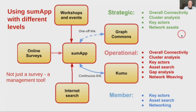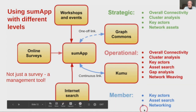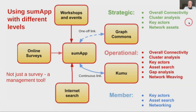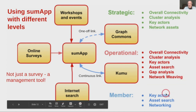We've tried to list the sorts of activity that would be interesting to people at the strategic level, the operational — basically network weaving level — and then the member level. So it's overall connectivity, cluster analysis, key actors, listing network assets — a mixture of both strategic and operational interests — and then basically searching the map to find other actors who may be able to assist you with various sorts of resources.